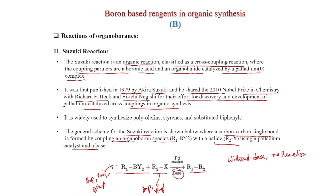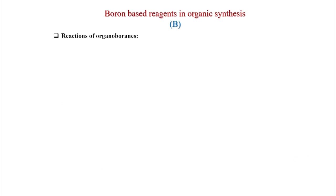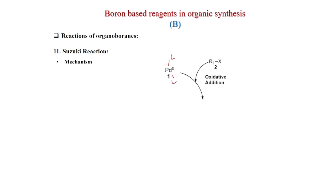The Suzuki reaction is widely used to synthesize polyolefins, styrenes, and substituted biphenyls. The general scheme involves forming a carbon-carbon single bond by coupling an organoboron species R1-B with an organohalide R2-X using a palladium catalyst and base. R1 and R2 can be aryl, vinyl, or even alkyl. Base is absolutely required — without base, no reaction occurs.